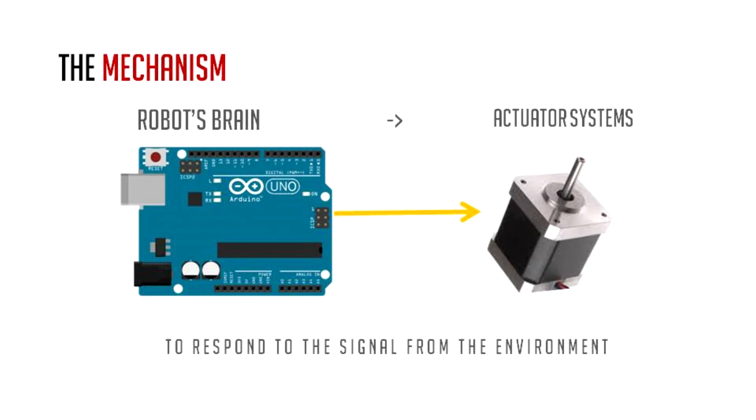The mechanism is the robot works with its brain. Here I've given you a picture of a microcontroller Arduino Uno. It has a little bit of memory, so I'm calling it the robot's brain. The actuator system is basically motor drives. With these motor drives it moves. After getting the signal from the environment, it moves the motors and then the robot in turn moves as well.